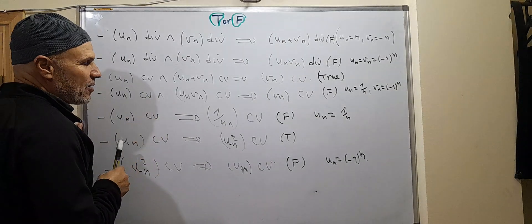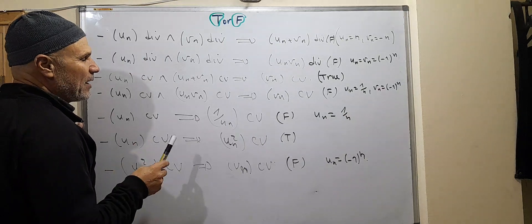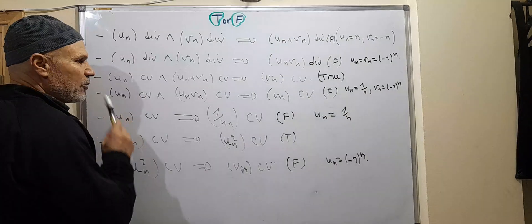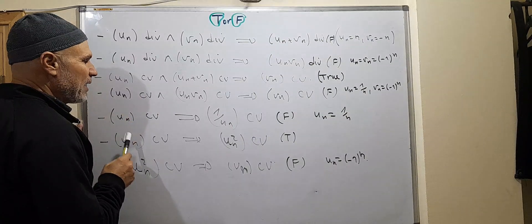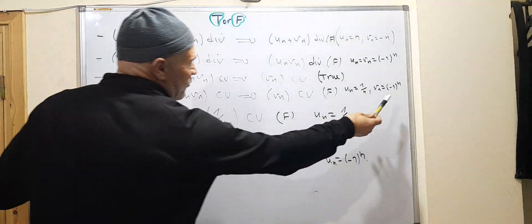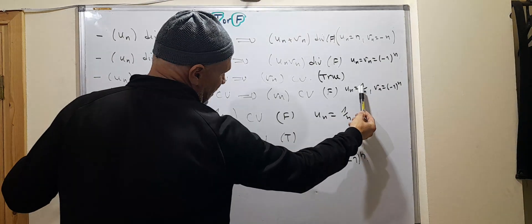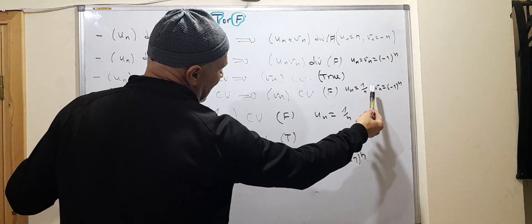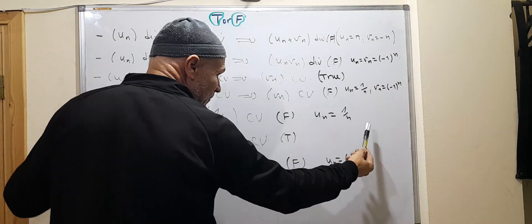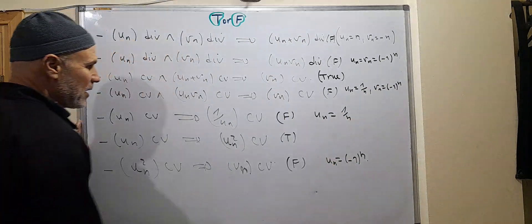If uN is convergent and uN times vN is convergent, how about vN? vN is not necessarily convergent — this is false. We can take uN equal to 1/N and vN equal to (-1)^N. The product is (-1)^N / N, which is convergent, but vN is not convergent.